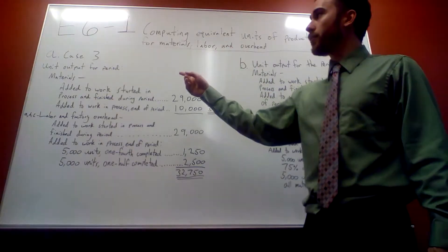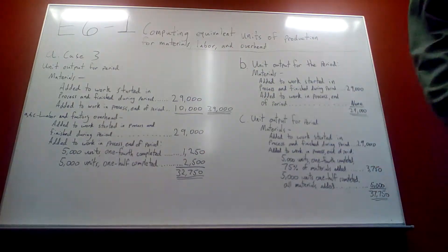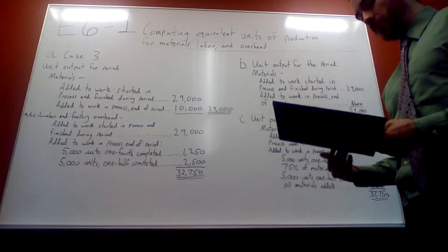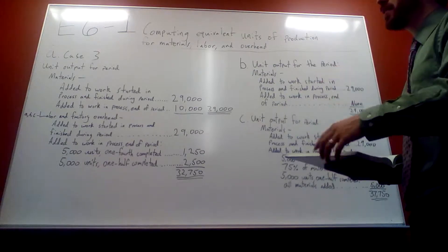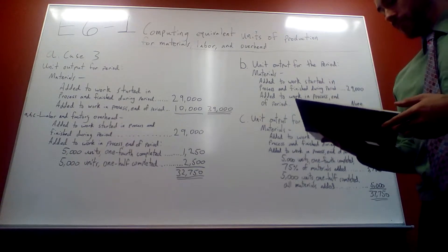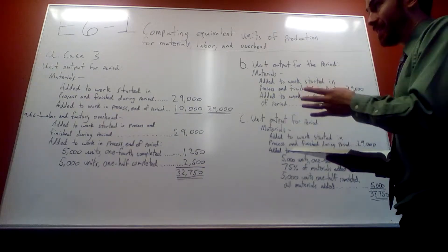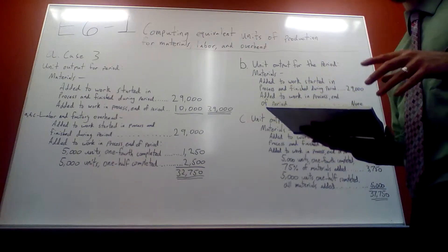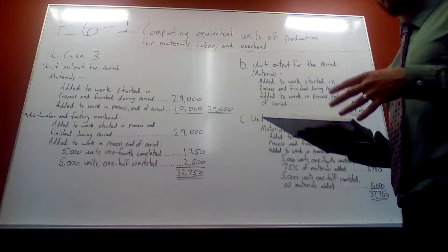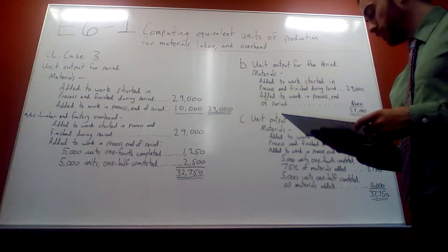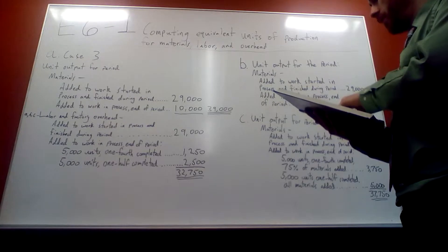So as you can see, in Case 3, Example A, all materials go into production at the beginning of the process. So basically, everything for materials is added. It's all 100%. Because as soon as you start production, it's at the beginning, everything's included.